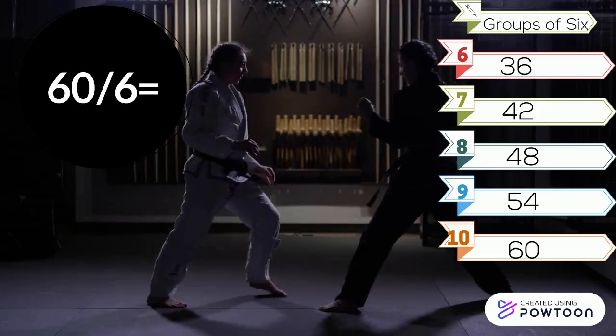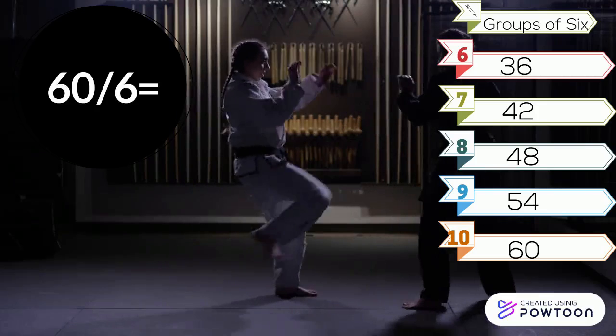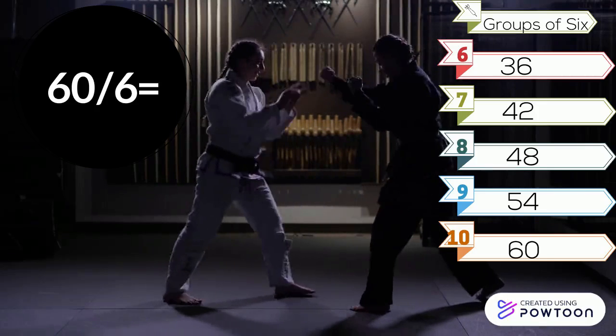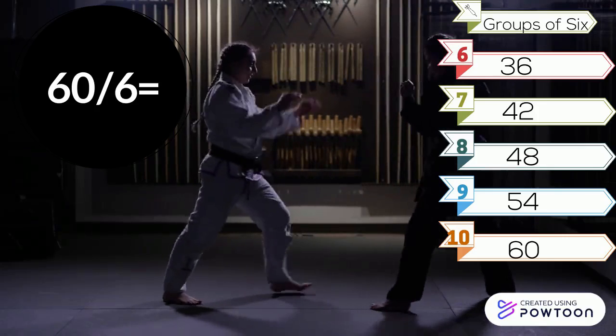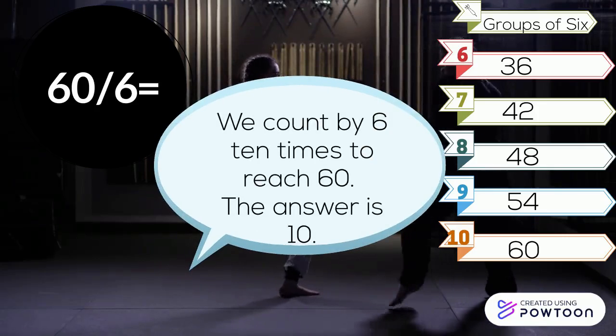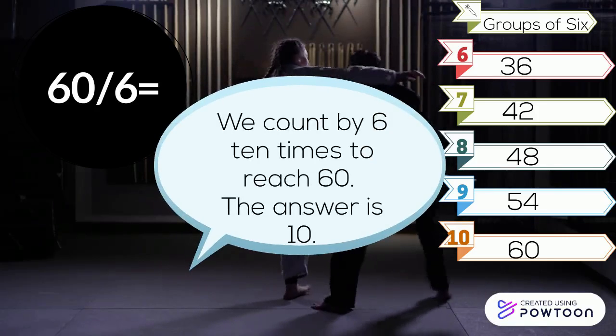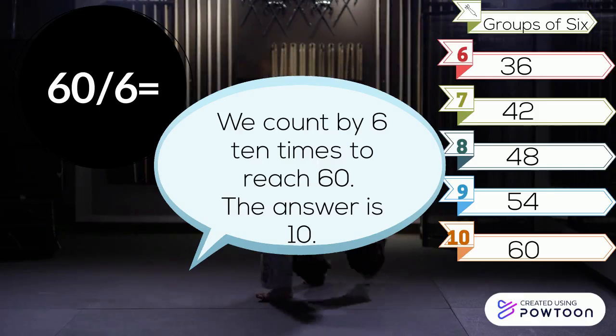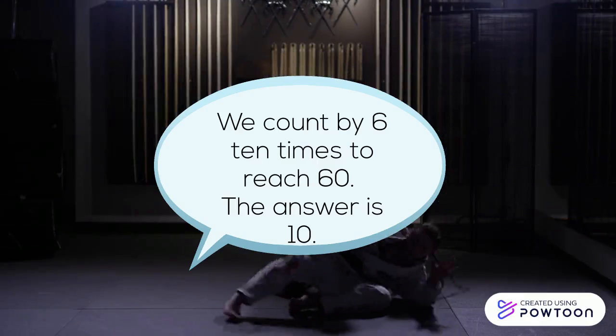60 divided by 6. Look over at your groups of 6. We count by 6 ten times to reach 60. The answer is 10.